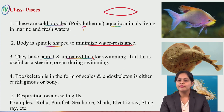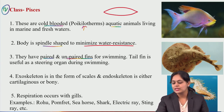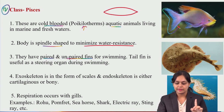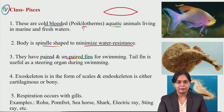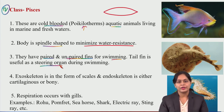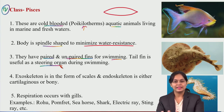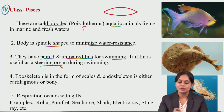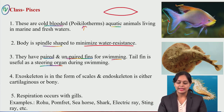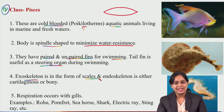Pisces have paired and unpaired fins. The tail fin is the unpaired fin and acts as a steering organ — similar to a car's steering, it guides the fish's body movement. Paired fins are also present and helpful for swimming. The exoskeleton is made up of scales. Endoskeleton is cartilaginous or bony — like in pomfret which we eat, bones and cartilage are visible.